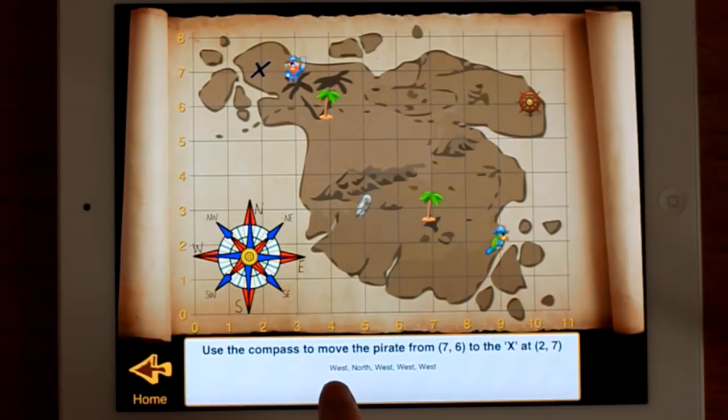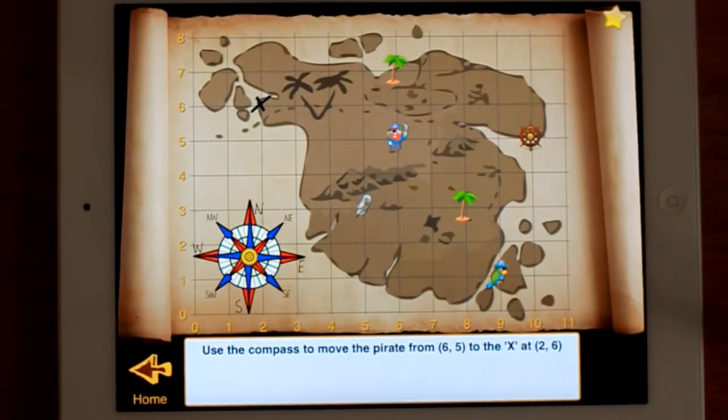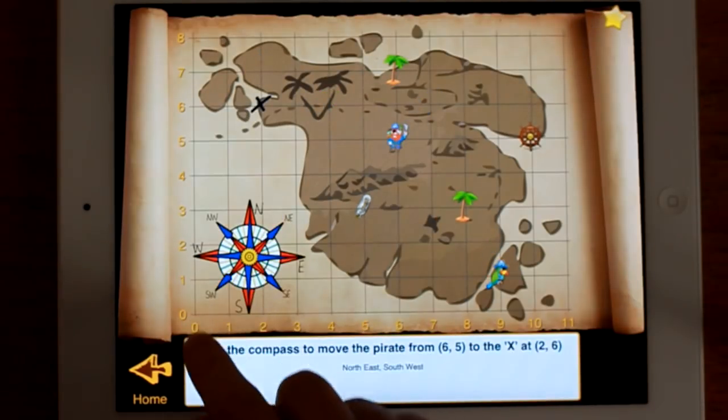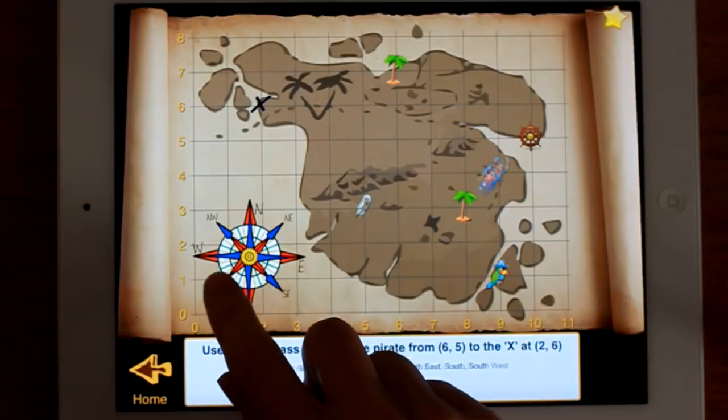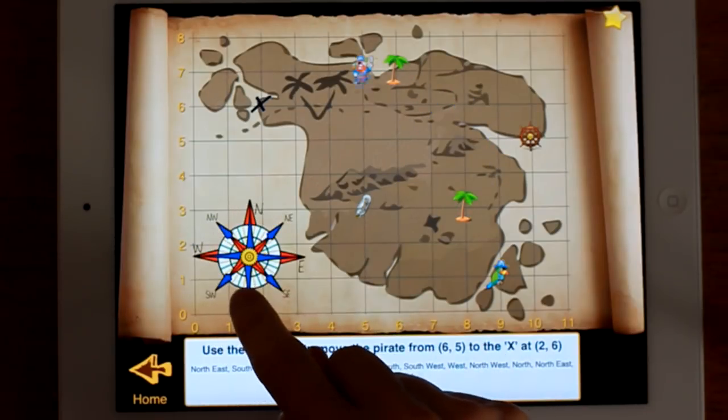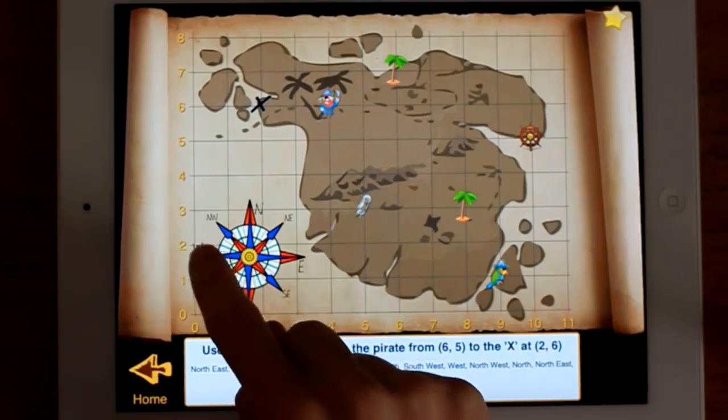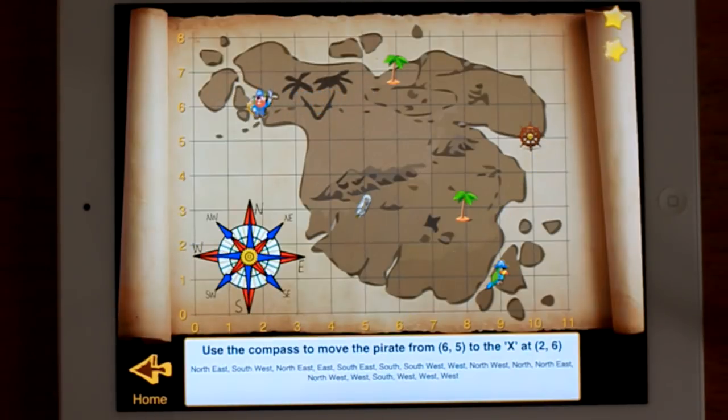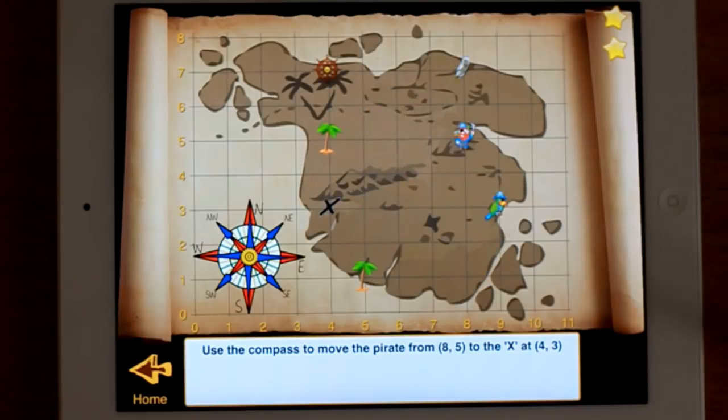And if you pause there, you'll actually see it says west, north, west, west, west. There you go. A little star there. You can move him north-east, south-east, etc. He doesn't of course finish the game until you've got there. You can take as long as you want to get there.